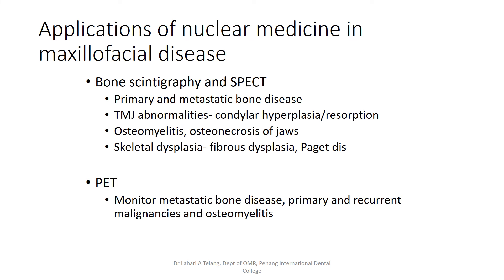The applications of nuclear medicine in maxillofacial disease, especially bone scintigraphy and SPECT, include visualizing primary and metastatic bone diseases and monitoring disease progression or healing. Other applications include TMJ abnormalities like condylar hypoplasia and resorption, osteomyelitis, osteonecrosis of the jaws, and skeletal dysplasias like fibrous dysplasia or Paget's disease. PET scan can be used to monitor metastatic bone disease, primary and recurrent malignancies, and osteomyelitis.